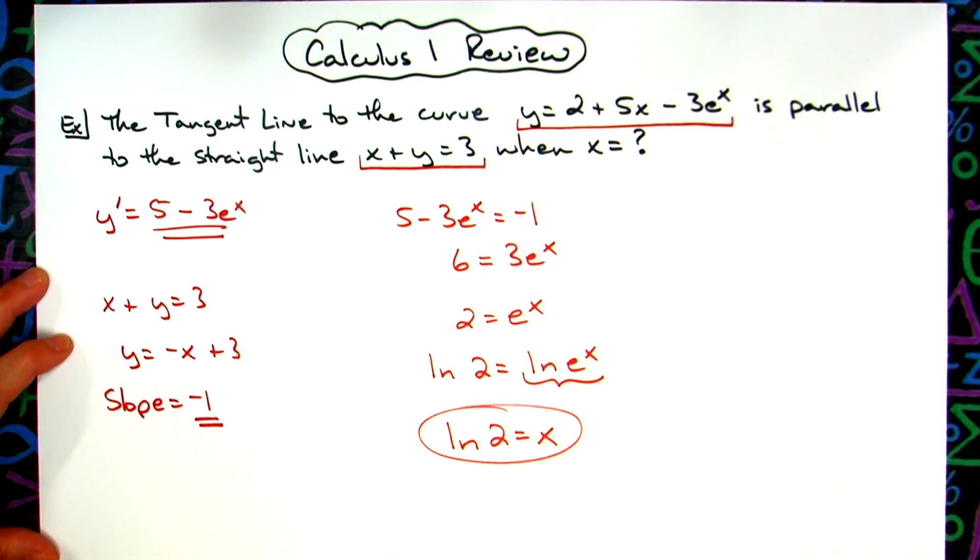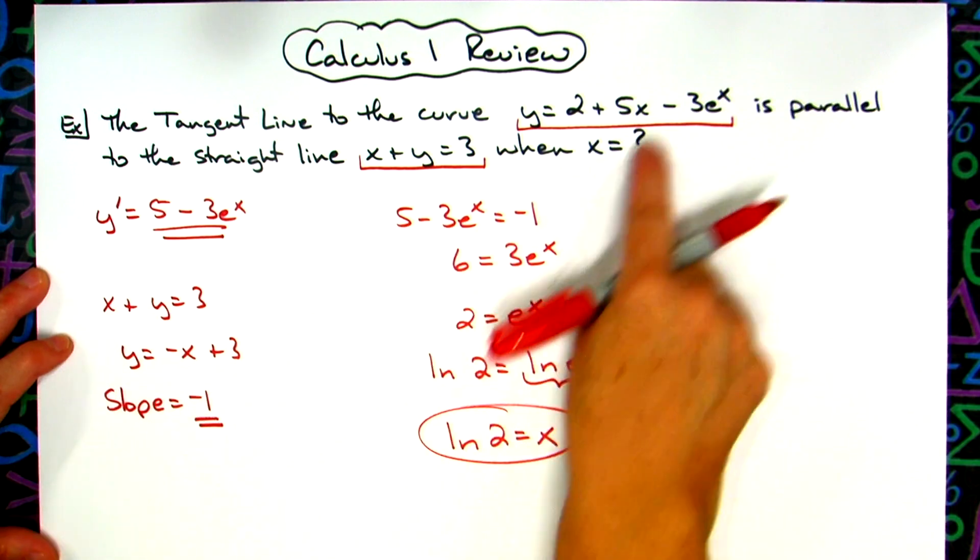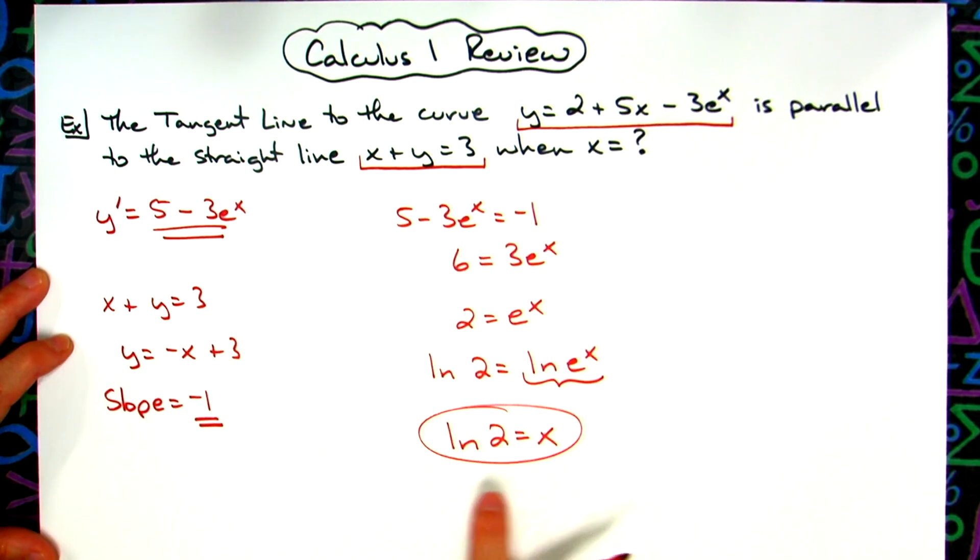So the x value at which the tangent line to this curve is parallel to this straight line is when x = ln(2). Pretty much a straightforward Calc 1 question that could show up on a final exam.